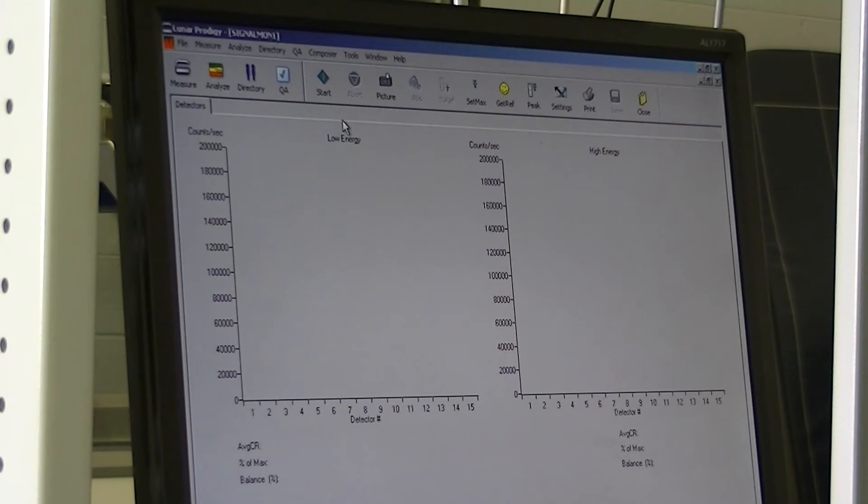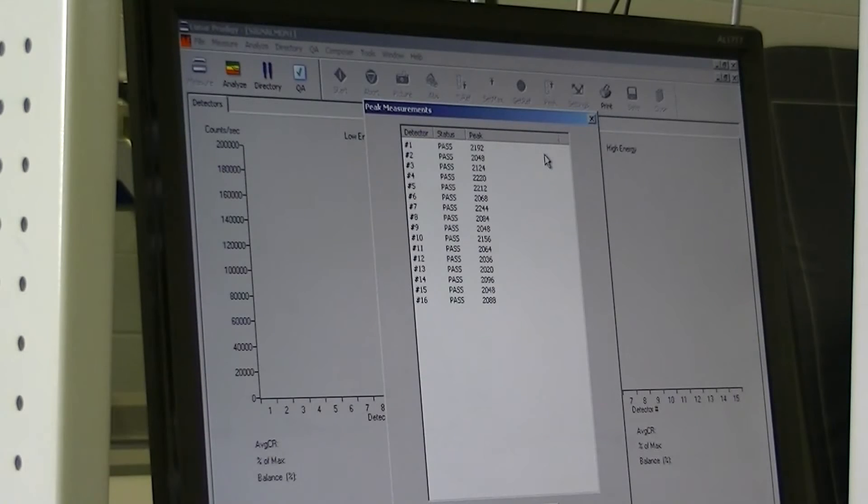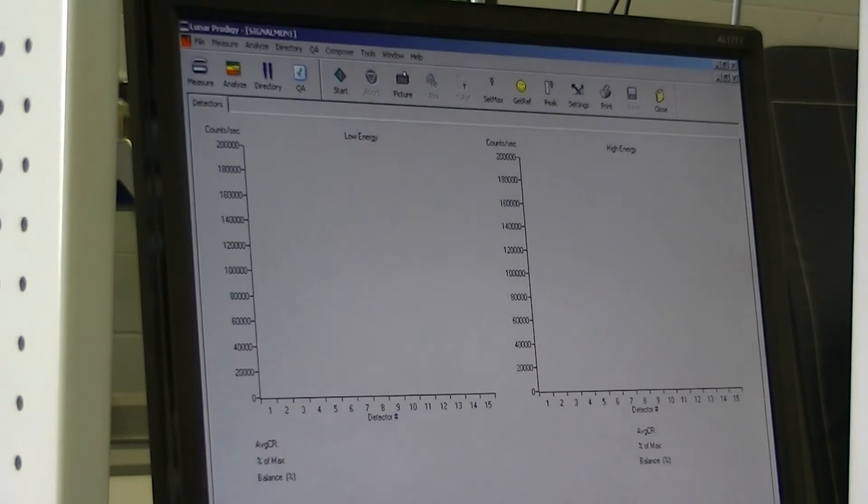Then from here, we're going to put our peaking brass over the slot on the collimator to block the x-ray. Once the peaking brass is over the slot on the collimator, go to your top toolbar and select Peak. This will run through a series of tests to test the detector. Once peak has passed, you'll get a printout of peak measurements of all passing. Hit OK and that'll secure the numbers in.